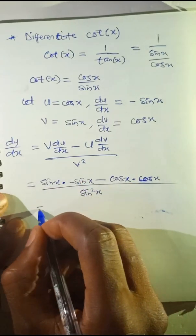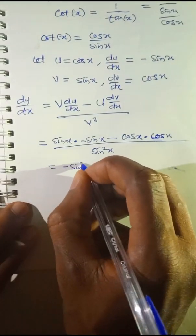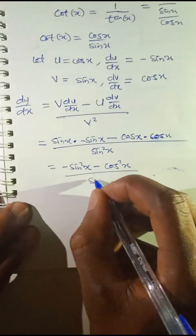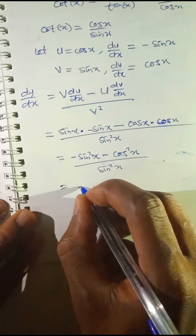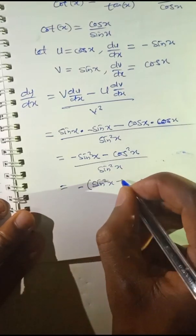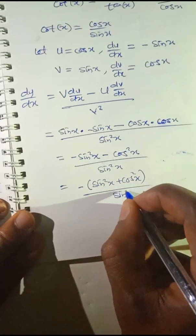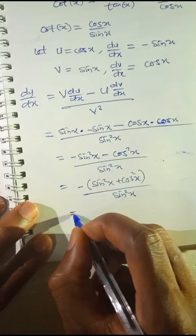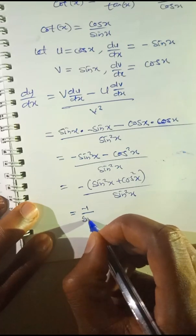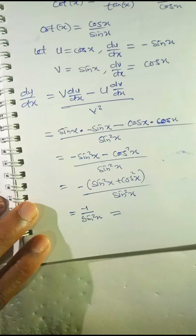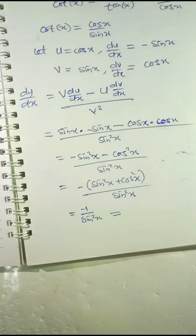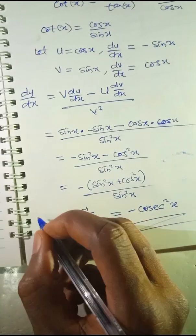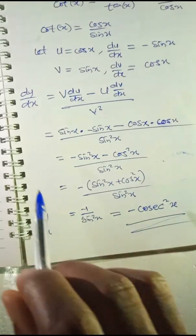This gives negative sine squared x minus cos squared x divided by sine squared x. By factorization: minus (sine squared x plus cos squared x) divided by sine squared x. From the trigonometric identity, sine squared x plus cos squared x equals 1. So we have negative 1 divided by sine squared x, which equals negative cosec squared x. This is the derivative of y with respect to x for cotangent of x.